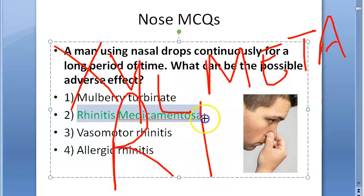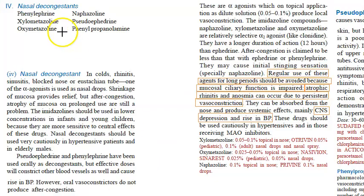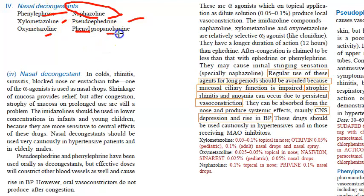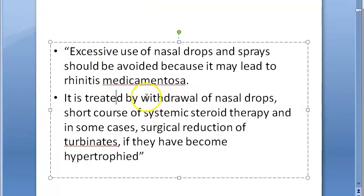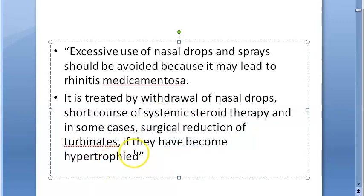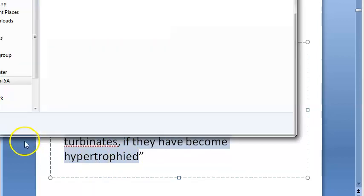Rhinitis medicamentosa — you remember xylometazoline from pharmacology. Basically, due to persistent vasoconstriction, it can lead to atrophic rhinitis, and anosmia can also occur. It can even affect the CNS. Treatment: withdraw the nasal drops, give short course systemic steroid therapy, and surgical reduction of turbinates if they have become hypertrophied.